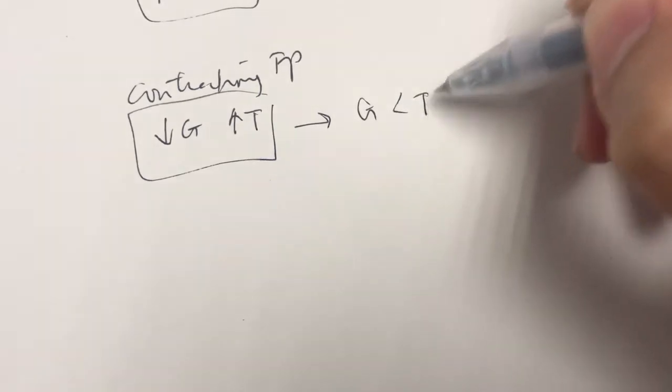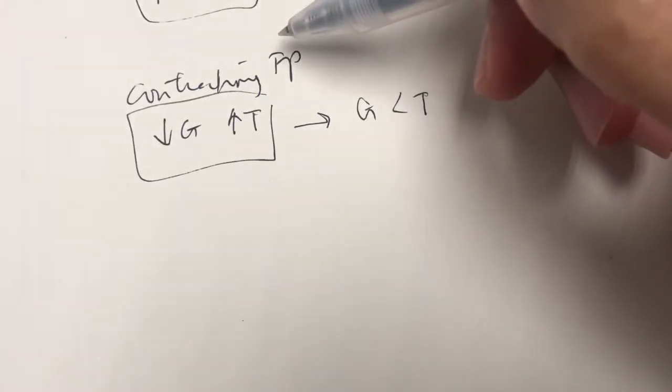So, in either way, what happens is you can see that the G is less than T. So, when the government adopt a contractionary fiscal policy, it would lead to a budget surplus.